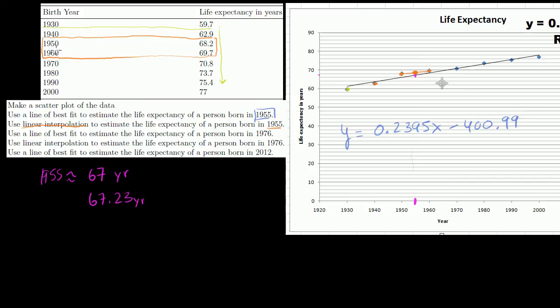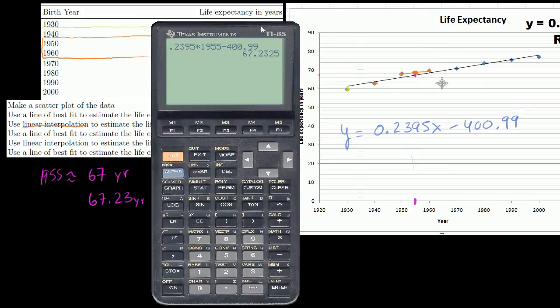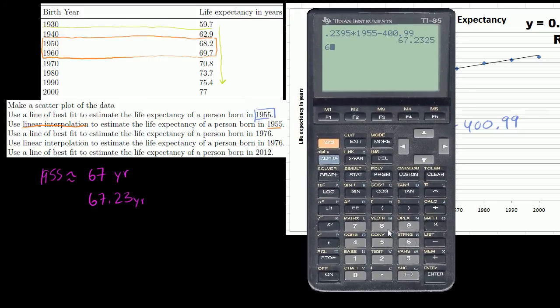But this is a line, and 1955 is right in between these two points. It's five from either one. So on this point right here, on that linear interpolation, we'll just be halfway between these two. So we could even average those. So let's do that. So if we just average those, 68.2 plus 69.7 is equal, and then we want to divide it by 2 is equal to 68.95.